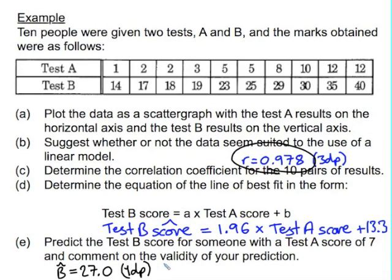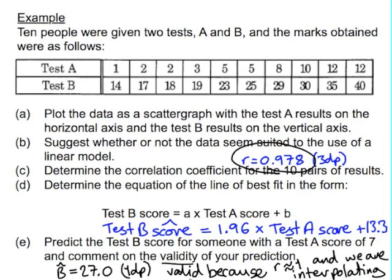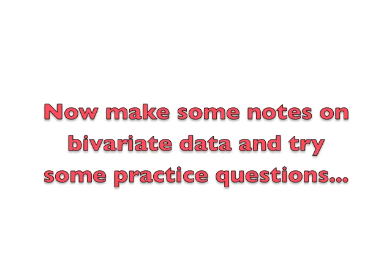Valid because r is close to 1, and we are interpolating, which means predicting a score within the domain of our original values.